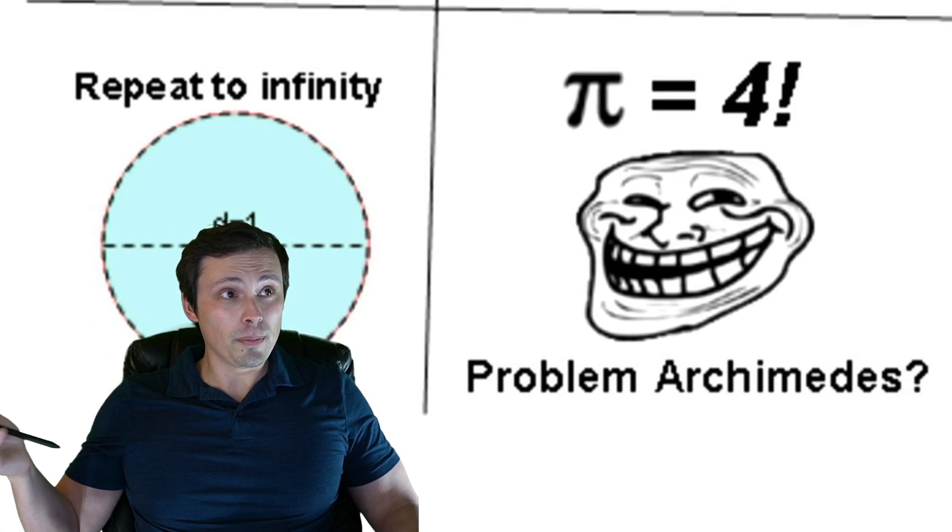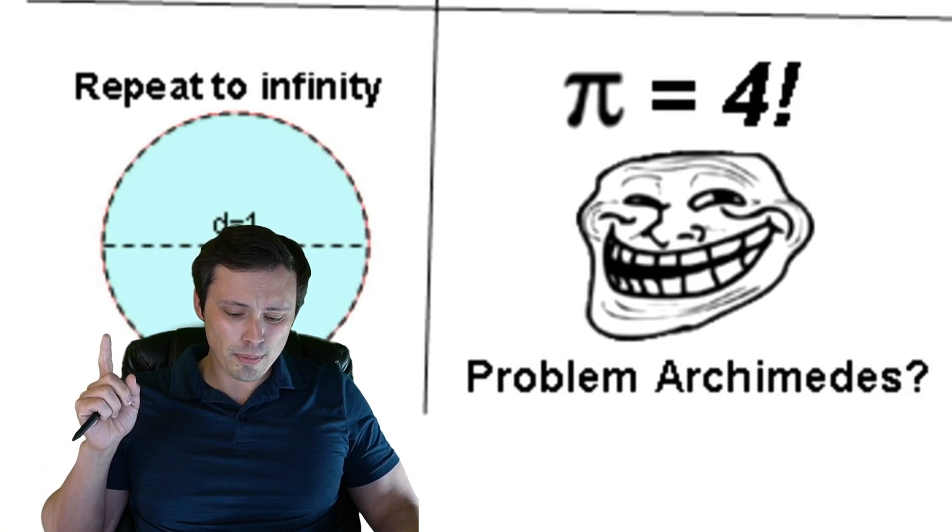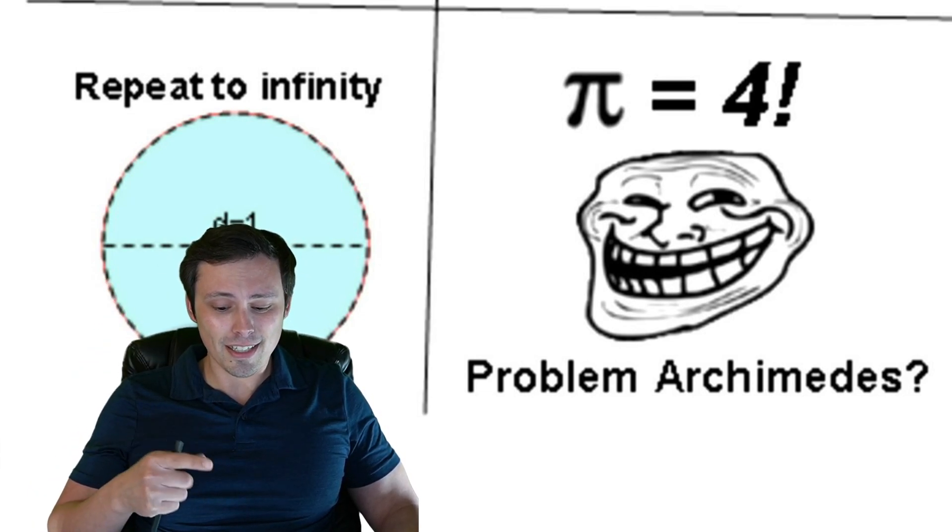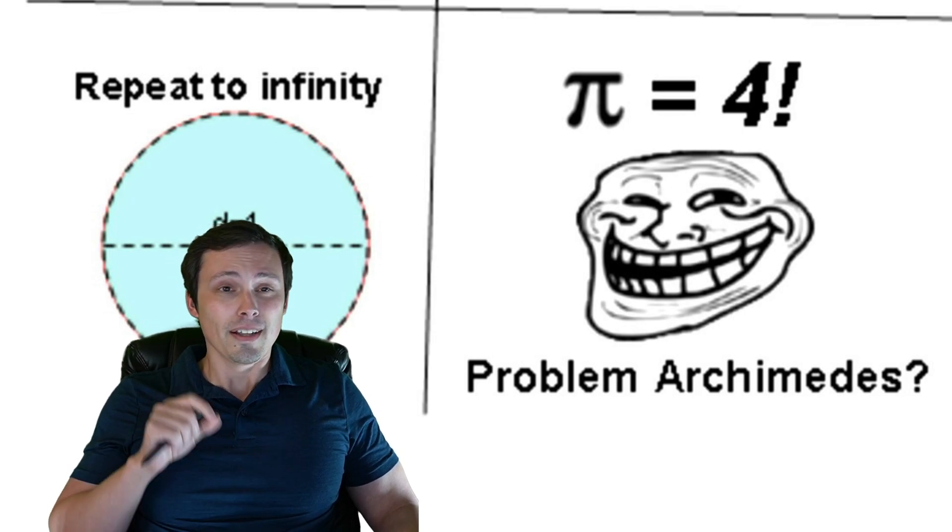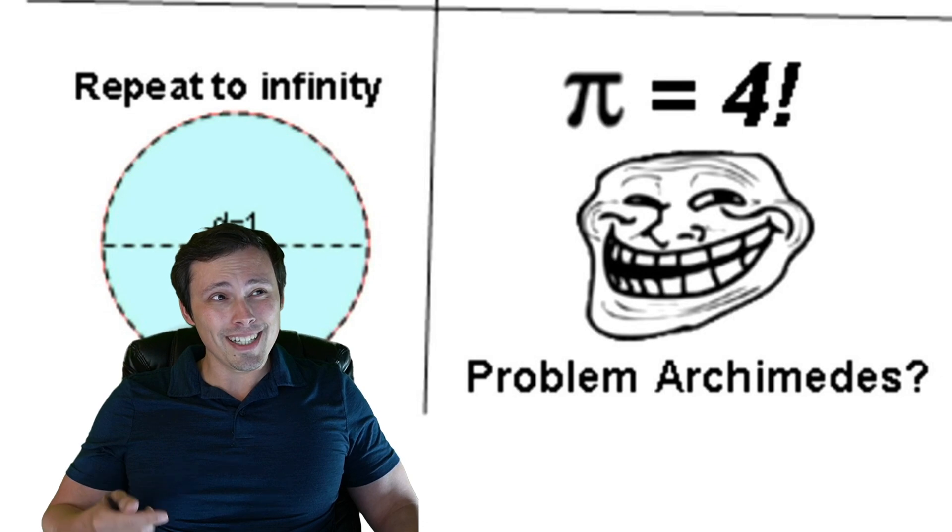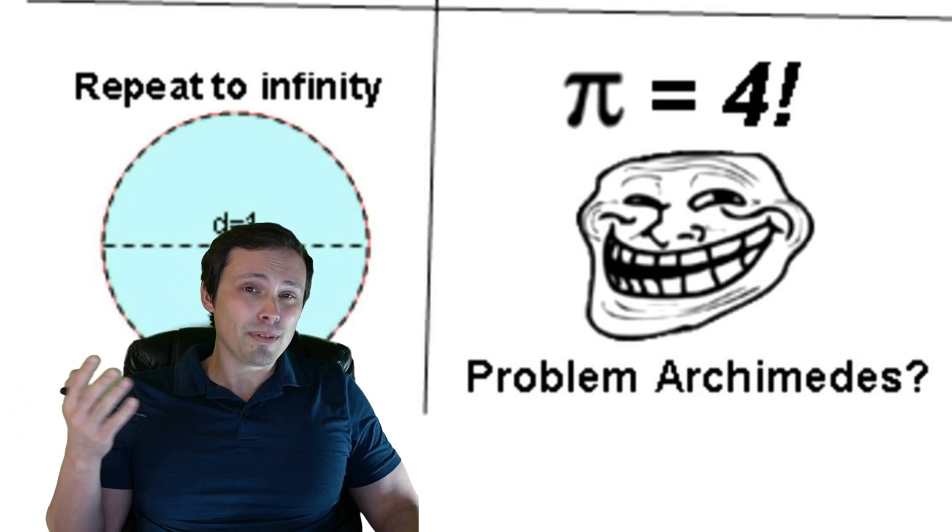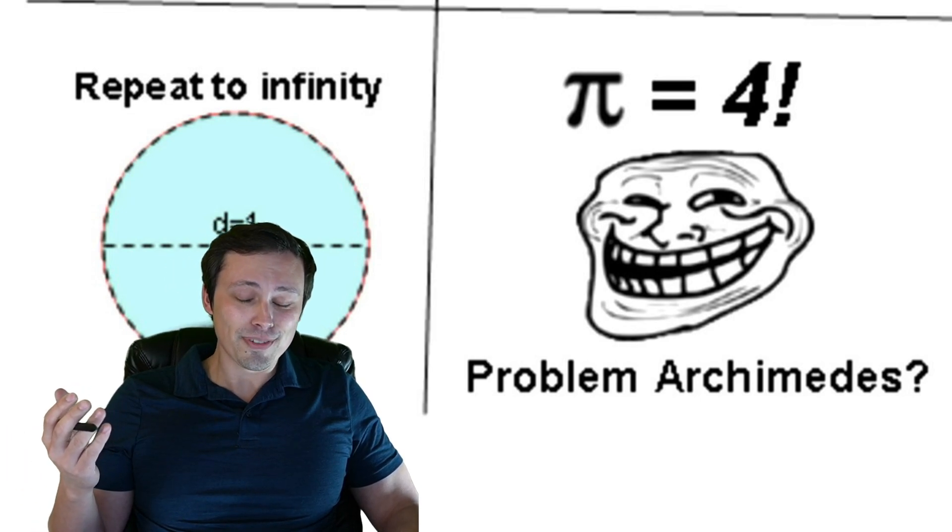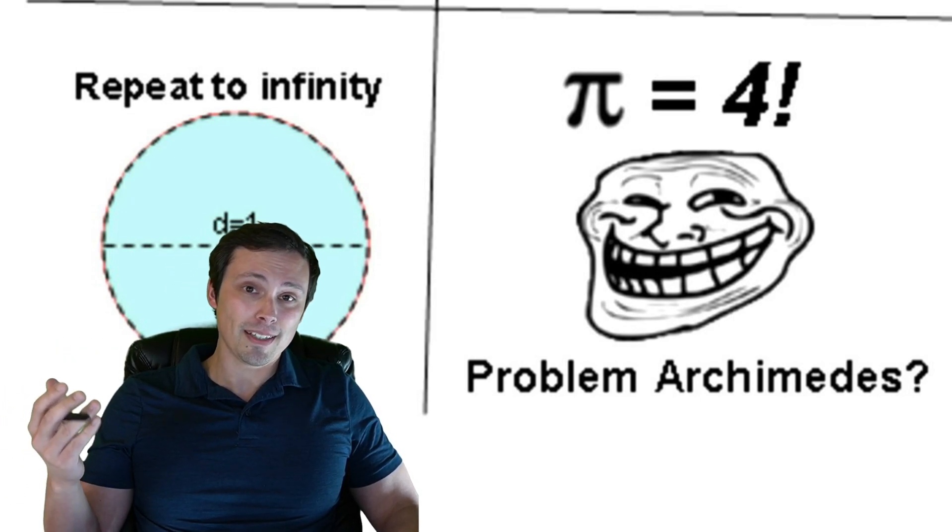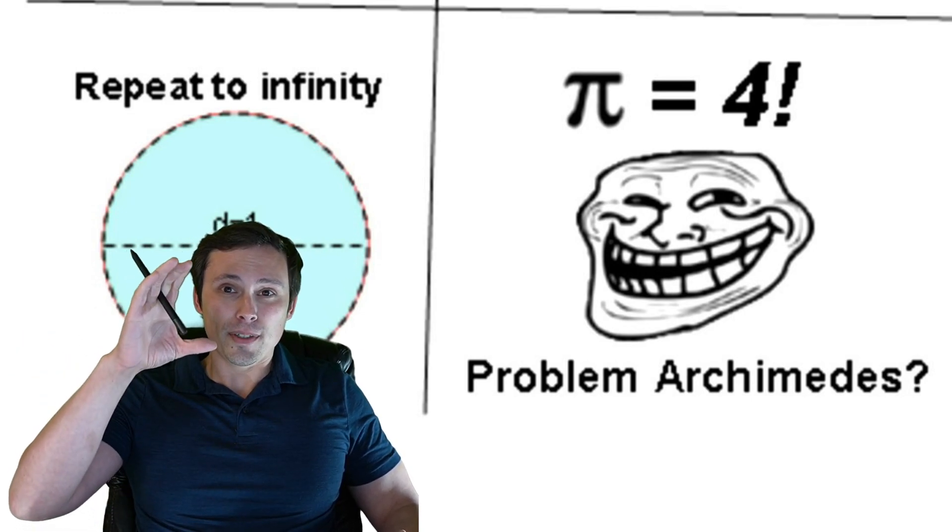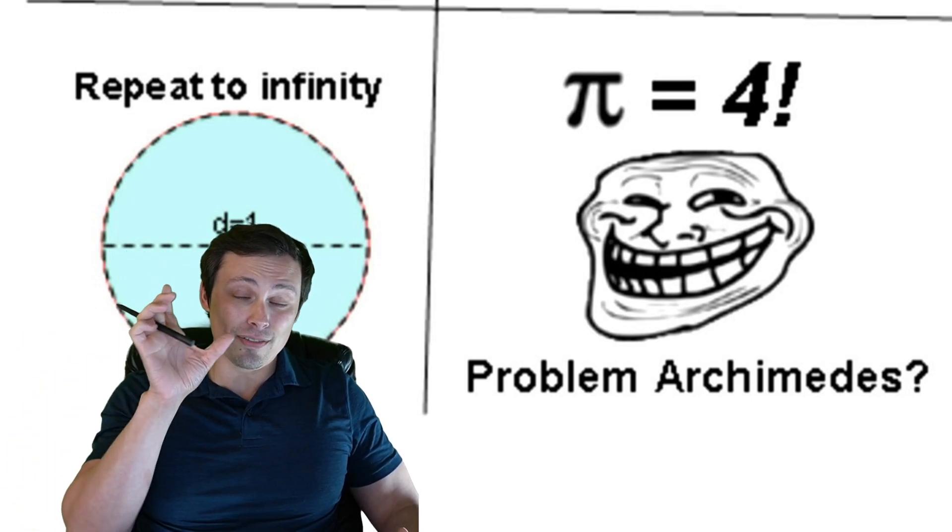Then we get π equals 4, problem Archimedes? Well, first let me point out I object to this because of the exclamation point—that's a factorial, and I can tell you that this argument does not prove that π is equal to 24. Anyway, problem Archimedes? Well, Archimedes, that's a reference—because we need to explain jokes for them to be funny, right?